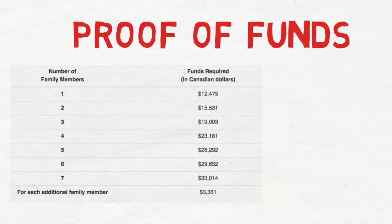If you are a single applicant, you need around 12,500 Canadian dollars. If you are applying with your spouse, you need around 15,500 Canadian dollars. If you are applying with your kid as well, you need around 19,000 Canadian dollars, and so on.